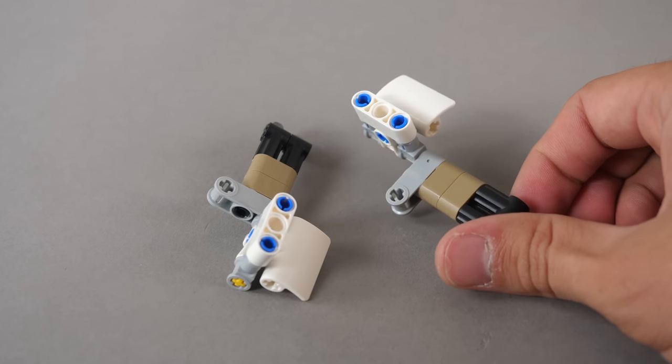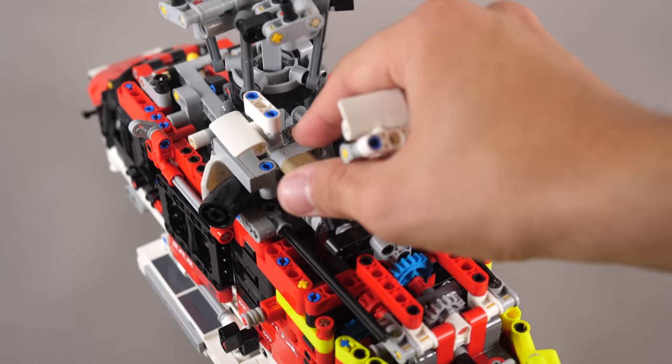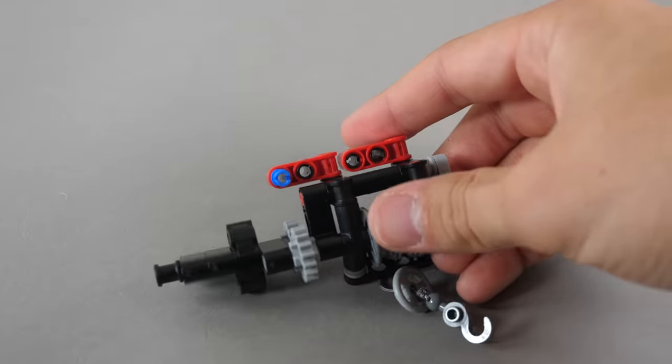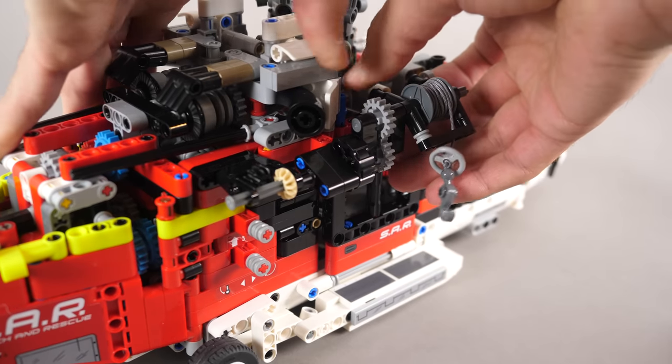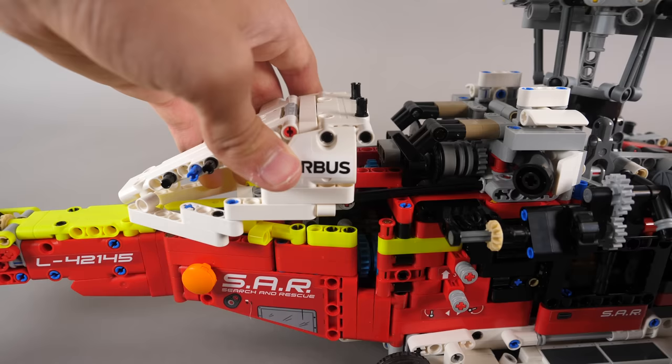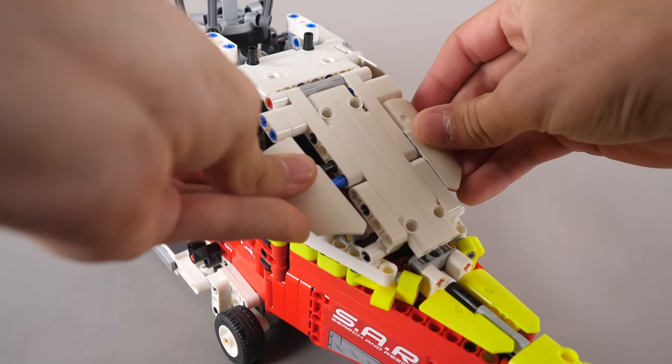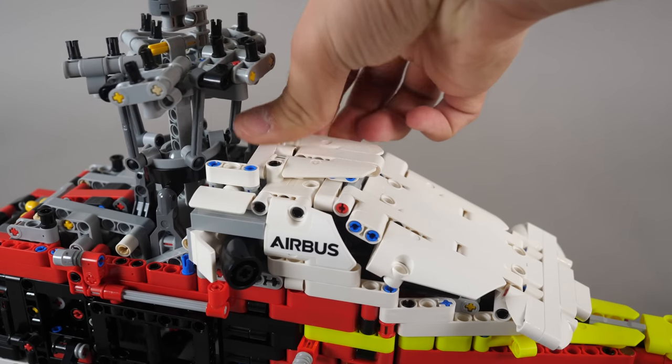The fifth bag is all about adding the final touches. We build up these tiny modules with the small panels, and we connect them onto the chassis. Next, we build up the winch, and it is securely connected onto the right side of the helicopter. We build up this big panel module, and it simply slides onto the top rear of the helicopter. We add a few beams and panels, and this section now looks beautiful.